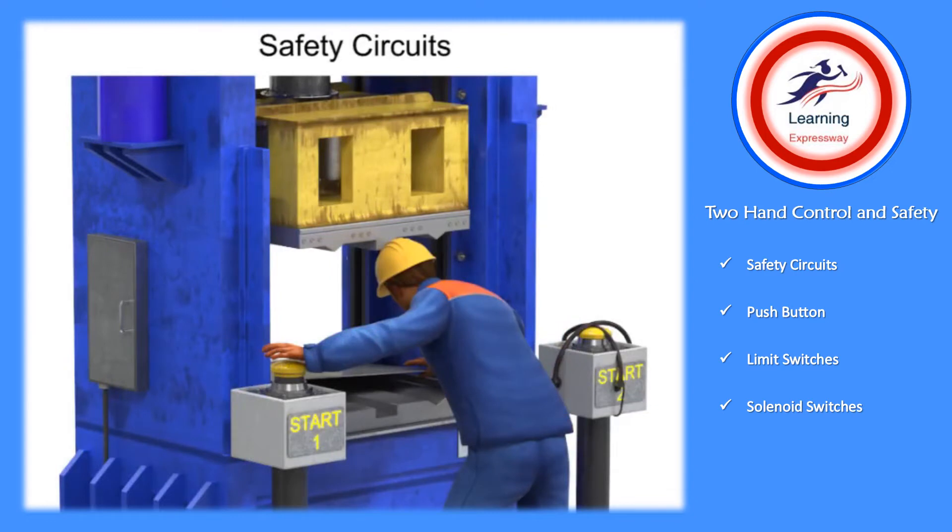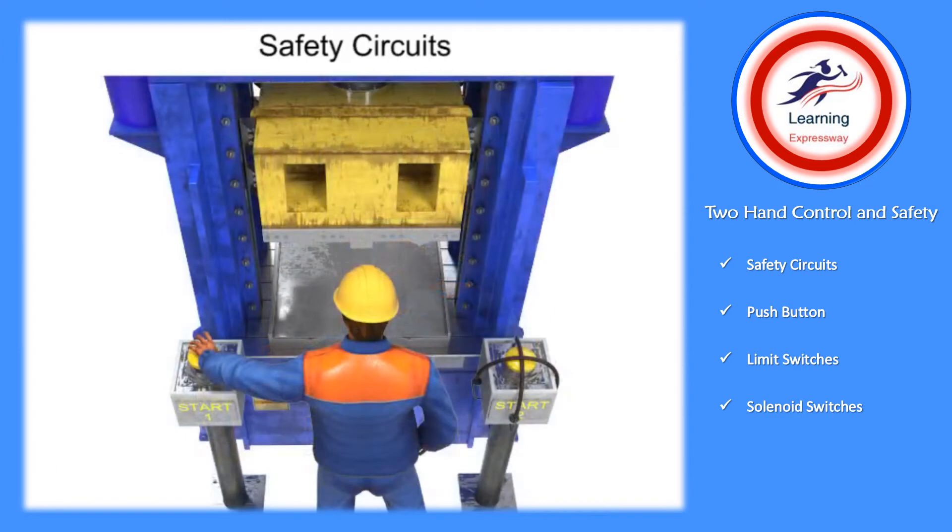To prevent this unsafe condition but still permit a single operator, anti-tie-down circuits are employed. An anti-tie-down circuit requires that the operator actuate both individual controls at the same time. If either control is prematurely actuated or continuously tied down, the cycle will not operate.